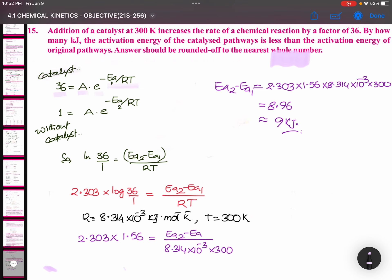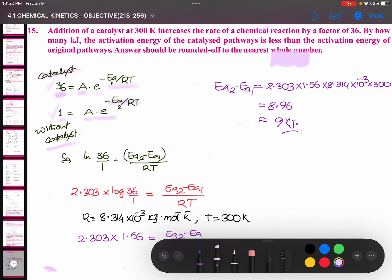With catalyst, the rate is increased 36 times. So I am taking this as 36 times A times e to the power of minus Ea by RT. And without catalyst, I am taking this as 1, because 36 times increased means it will be 1 times A times e to the power of minus Ea by RT. Correct? Any doubt in this? Good.